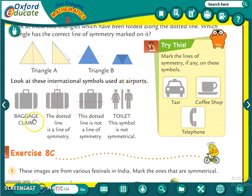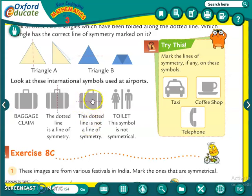Now here is another example - look at these international symbols used at airports. For the baggage claim symbol, the dotted line in the middle is a line of symmetry because both sides are the same. On the next picture, the vertical line is not a line of symmetry because both sides of the line are not the same. The toilet symbol is also not symmetrical because the picture on both sides of the line is not the same.